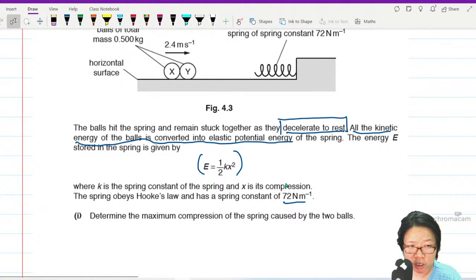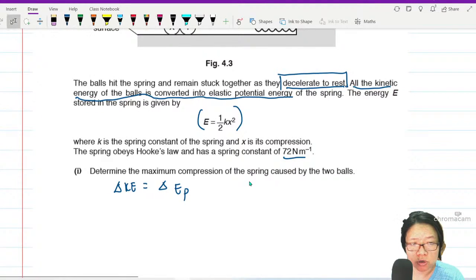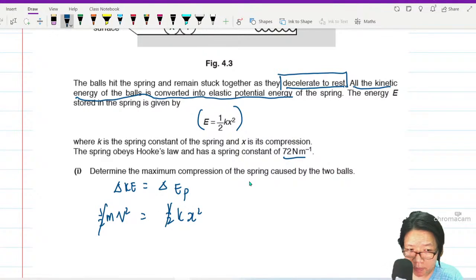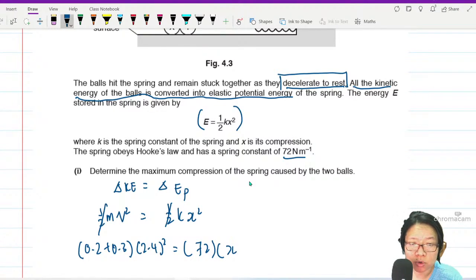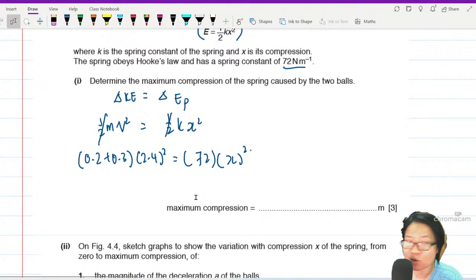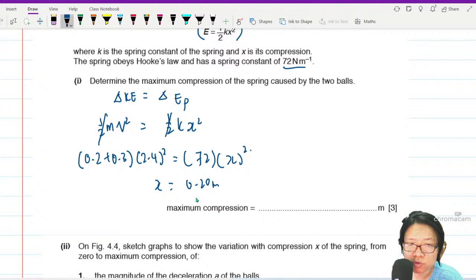Maximum compression of the spring, you can say change in KE is change in potential energy of the spring. This will be half mv square. Change in potential energy will be half kx square. Cancel the half away. This mass, since X and Y are traveling together, that would be 0.2 plus 0.3, speed was 2.4 square. Spring constant is 72, we are looking for extension. This is pretty straightforward, direct substitution. So the maximum compression is 0.20 meter.